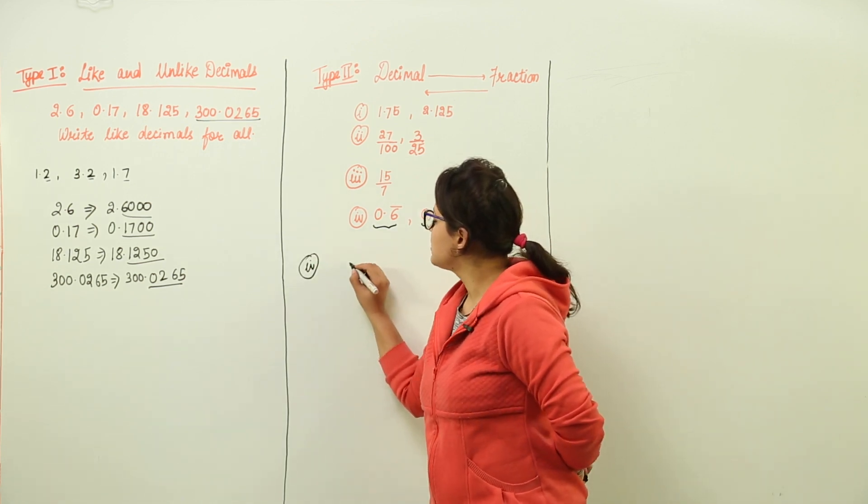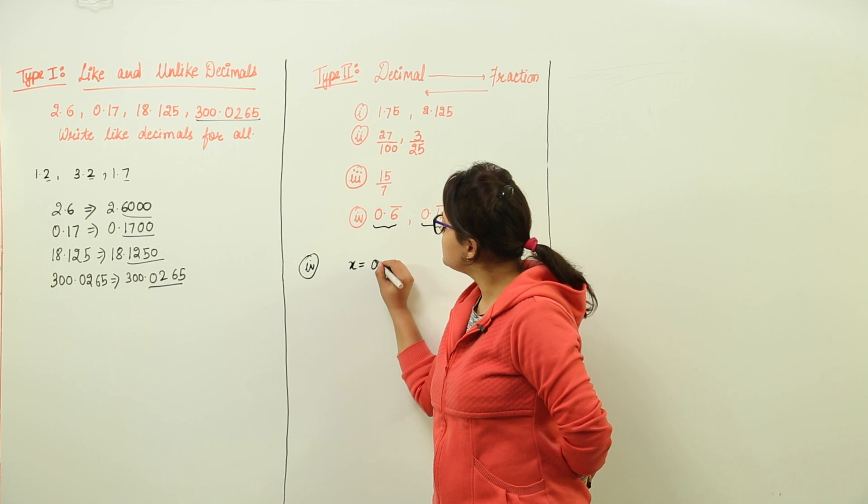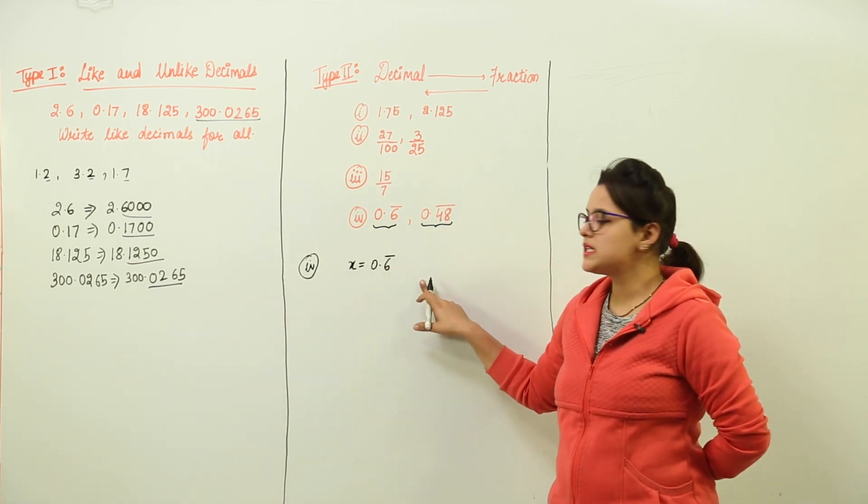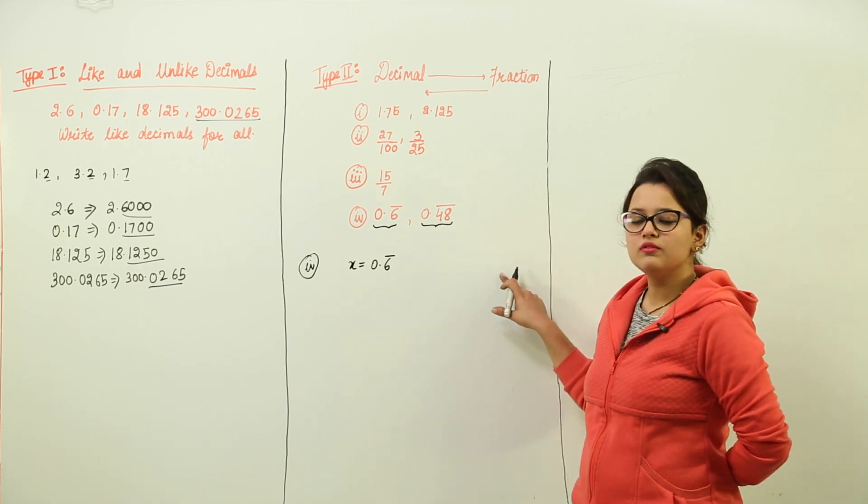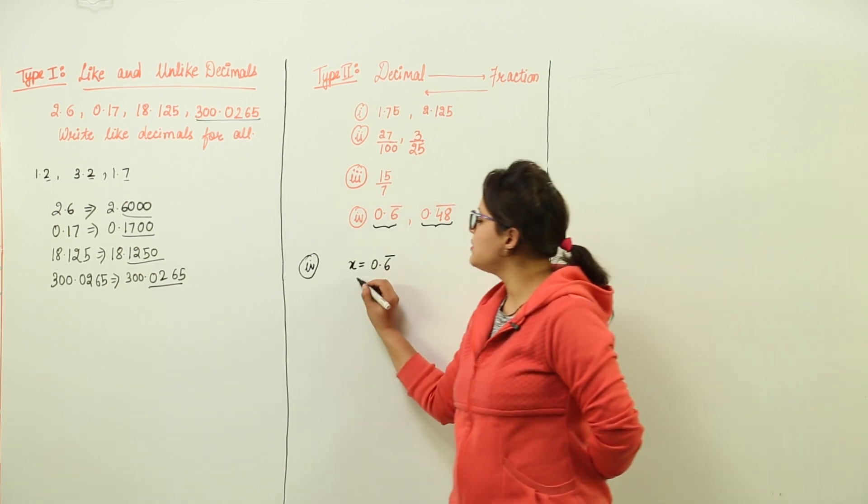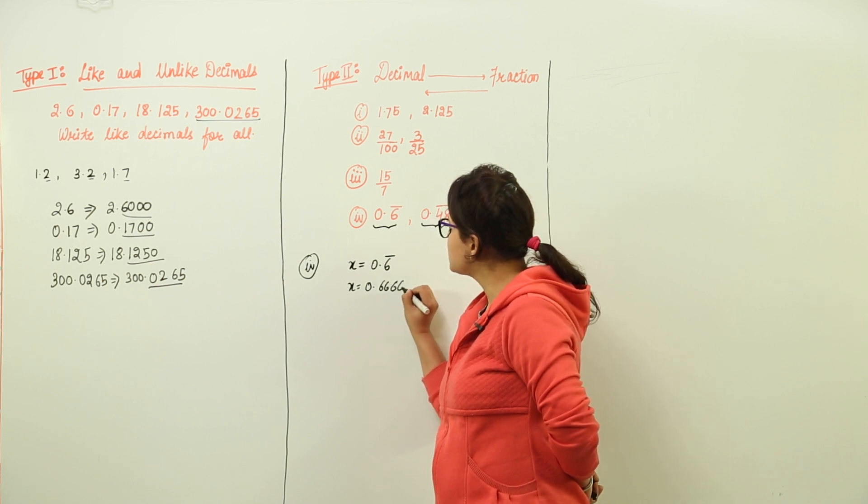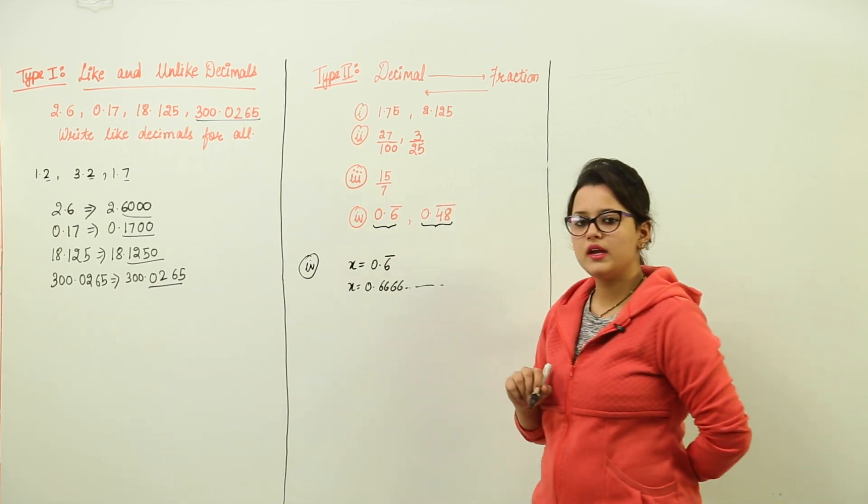Let us write x equal to 0.6 bar. Now this bar is representing that 6 is repeating infinite number of times. That means this can be written as 0.6666 and so on, infinite number of times.